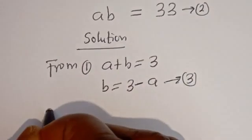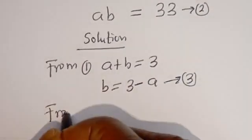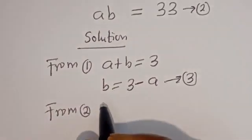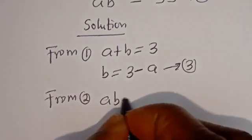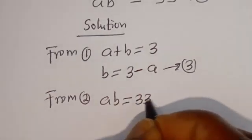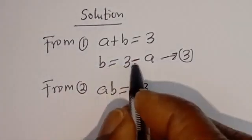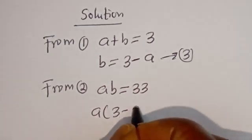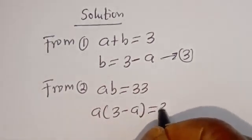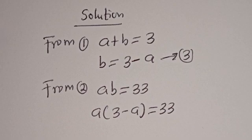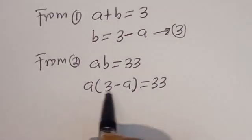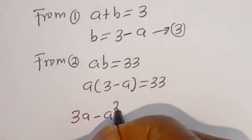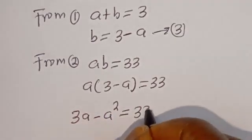Also from equation 2, we can substitute for B. That is, A times B is equal to 33. Then when B is equal to 3 minus A, we have A times (3 minus A) is equal to 33.